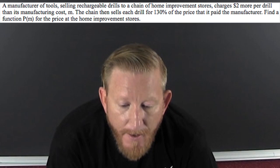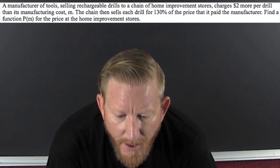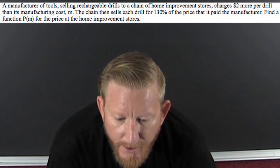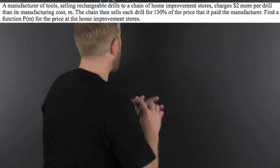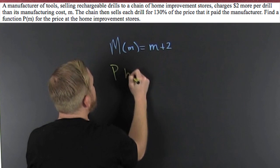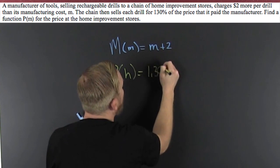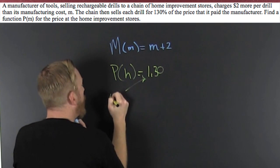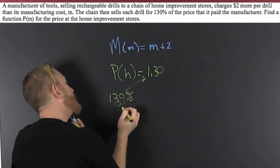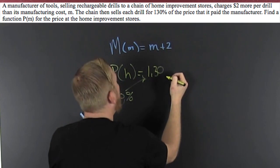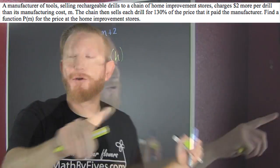The chain store then sells each drill for a hundred and thirty percent more of the price that it paid the manufacturer. So if we're going to translate that, I like to use h — that's 1.3. Why? Because that's one hundred and thirty percent. Move the decimal over two places and you get 1.3. So that's 1.3 times whatever it bought it for.